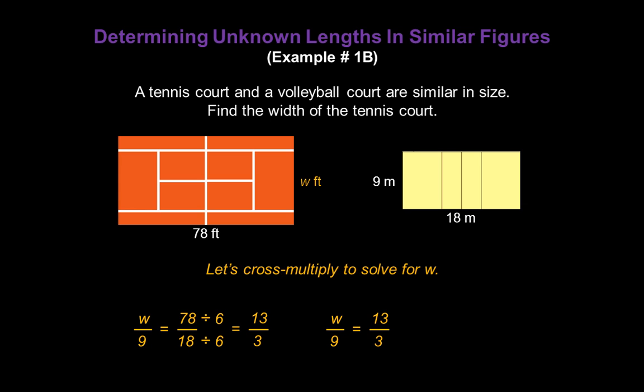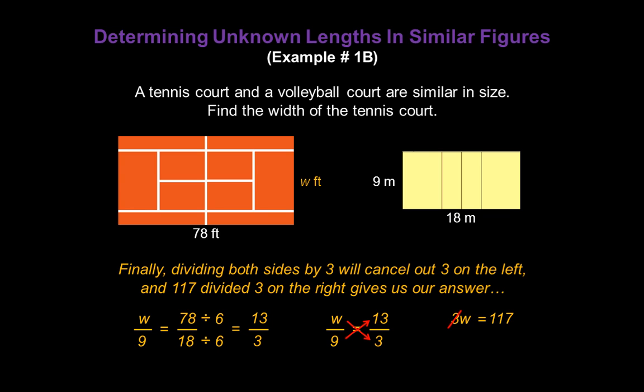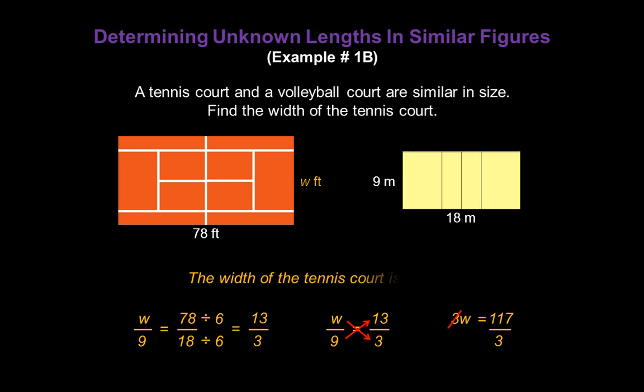Now let's go ahead and cross multiply to solve for W. W times 3 is 3W, and 9 times 13 is 117. Finally, dividing both sides by 3 will cancel out the 3 on the left, and 117 divided by 3 on the right will give us our answer. The width of the tennis court is 39 feet.